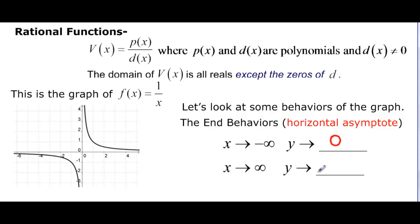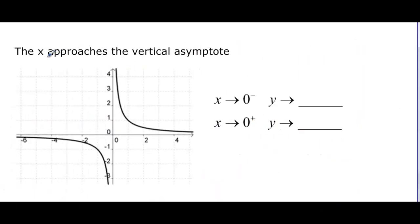It just never quite gets there. And then as we go to the other direction and all the way to the right and to infinity on the x-axis, we see that again y is tending toward zero but not crossing it. So let's see what happens when we have x approaching the vertical asymptote. What we looked at before was the horizontal asymptote. Now we're looking at the vertical asymptote which in this case happens to be the y-axis.